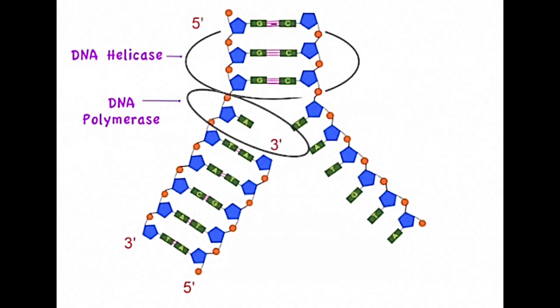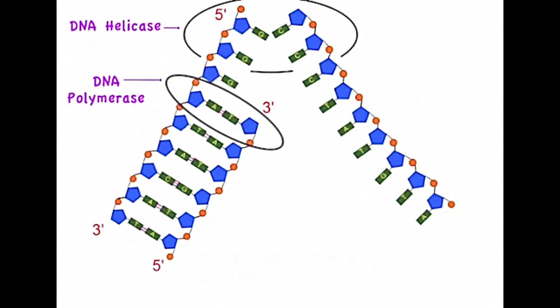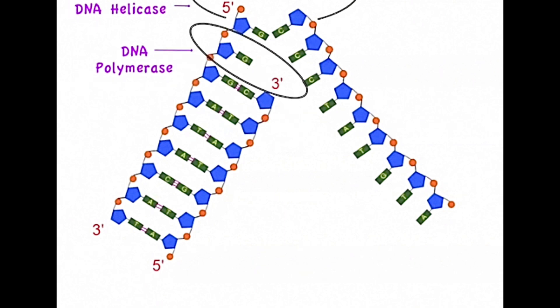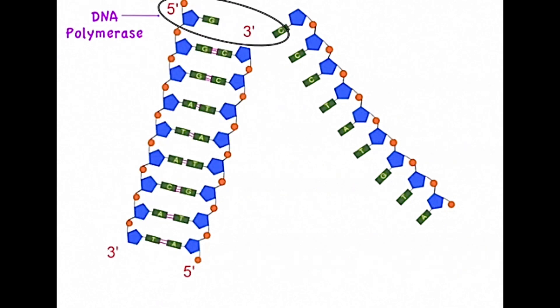As DNA helicase continues to unwind, the DNA polymerase continues to build the newly synthesized strand in the 5' to 3' direction, the same direction as the movement of the replication fork. As a result of this we say that DNA replication on the leading strand takes place continuously.